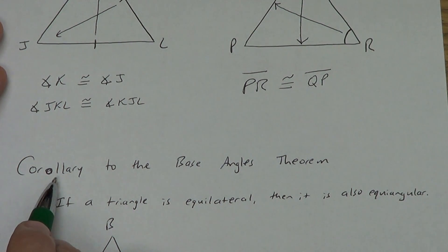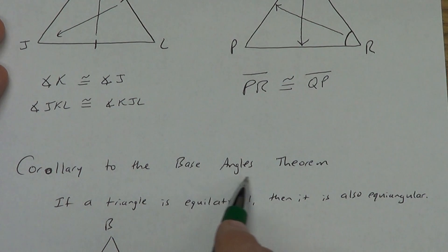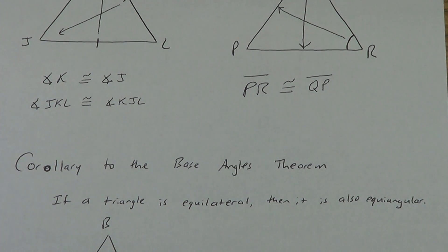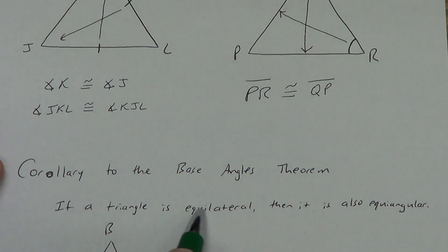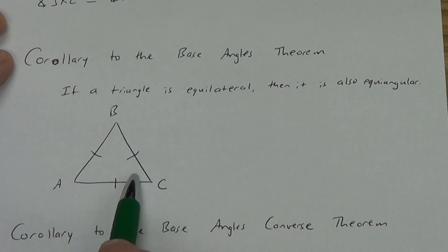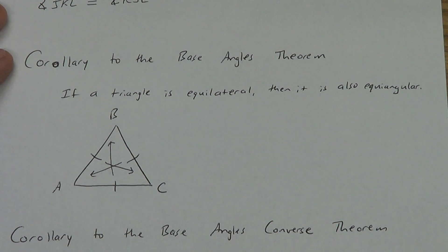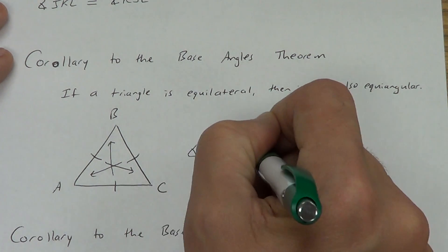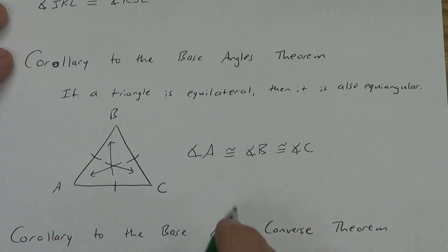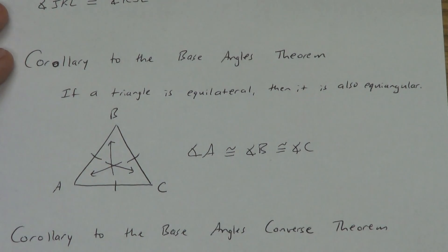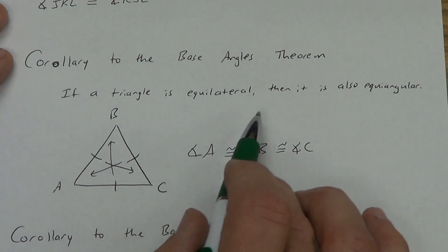Remember corollary — we saw this once before with the corollary to the Triangle Sum Theorem. We have a corollary to the Base Angle Theorem. A corollary is a theorem that's so easy because it comes from something else. The Base Angle Theorem said if you've got two congruent sides, you have to have two congruent angles. This corollary says if a triangle is equilateral — three congruent sides — then it is also equiangular — three congruent angles. If you draw the arrows, they point to angle B, angle A, and angle C. So angle A is congruent to angle B, which is also congruent to angle C. If you have three congruent sides, equilateral, then you also have to have three congruent angles.